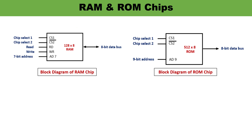Just to take a review about RAM and ROM chips — I have discussed in detail in the previous video. Here you can see the block diagram of a RAM chip. The capacity of this RAM chip is 128 x 8, meaning 128 words of 8 bits each. Since it has 128 locations, it requires 7 address lines, because 2 raised to the power 7 is 128. RAM is random access memory, so both read and write operations can be performed — data is bidirectional. There are 2 chip select lines: chip select 1 is active high, chip select 2 is active low.